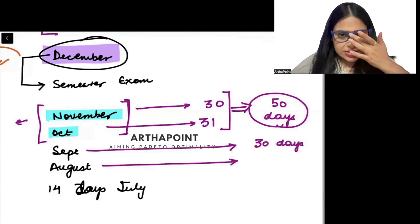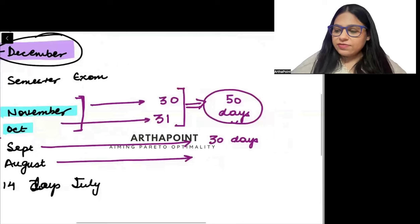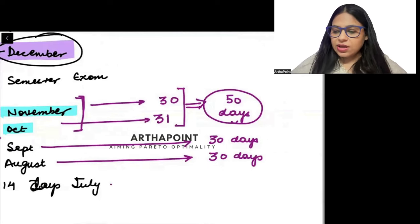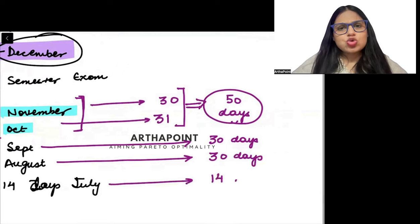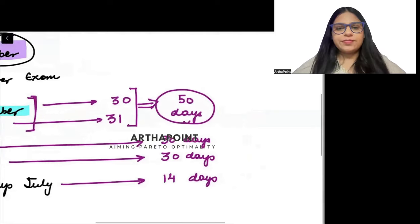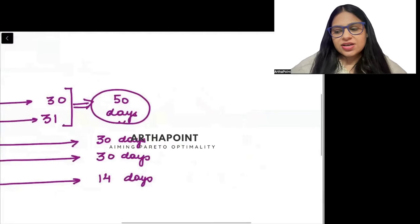September 30 days. August also has some festivals but we will go ahead and take it at 30 days, one or two days here and there. And let's take that you are super super dedicated and 14 days you are giving in July.